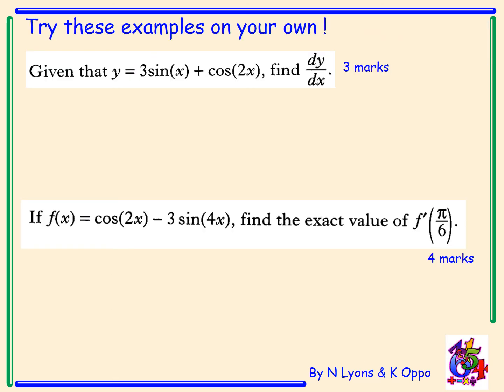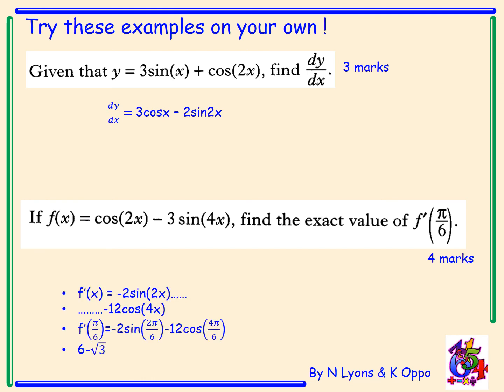Now it's your turn — try these past paper examples on your own: three marks and four marks, seven marks total. Pause and take about seven minutes, then come back for the answers. The first question (3 marks): dy/dx — be careful, if the function is y = ... you must write dy/dx, not f'(x), or you risk losing a mark. dy/dx = 3 cos x - 2 sin 2x. One mark for the first term, two marks for the second.